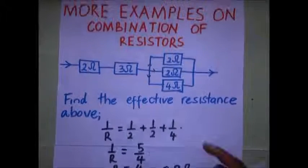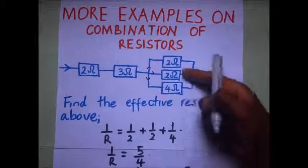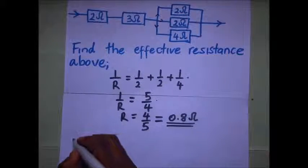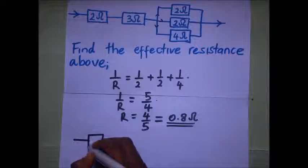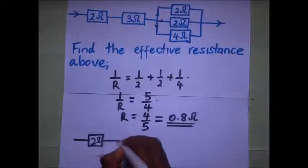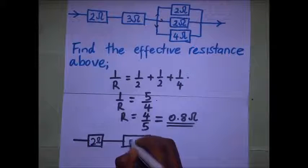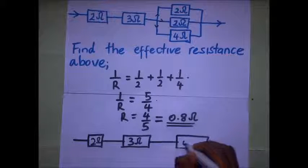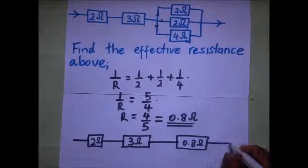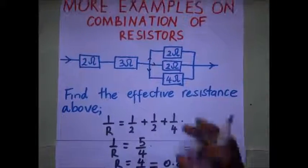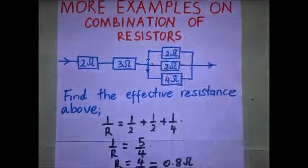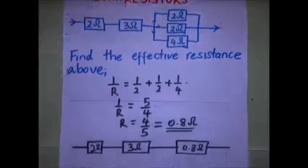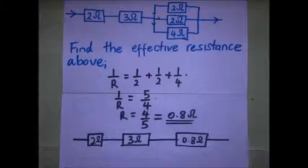So this effective resistance is 0.8 ohms. Our new simplified diagram now becomes: we have 2 ohms connected to 3 ohms, and that is also connected to 0.8 ohms. The 0.8 ohms is the effective resistance of the parallel combination, the 3 ohms is that resistor, and the 2 ohms is that one — and now they are all in series.